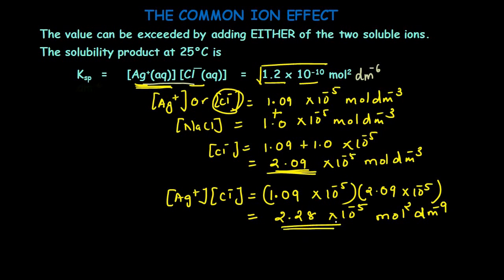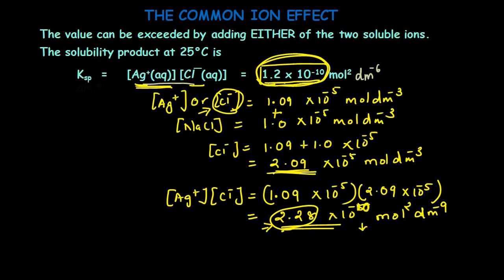Substituting into the ion product: [Ag⁺] × [Cl⁻] = 1.09 × 10⁻⁵ × 2.09 × 10⁻⁵ = 2.28 × 10⁻¹⁰ mol² dm⁻⁶. The Ksp value of silver chloride is only 1.2 × 10⁻¹⁰. So this value has exceeded the Ksp. To reduce it back, silver chloride precipitates out. This is why adding any common ion to such sparingly soluble compounds causes the ion product to exceed Ksp, and some of the solid compound precipitates out.